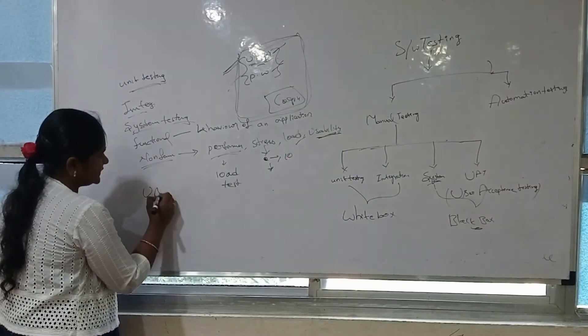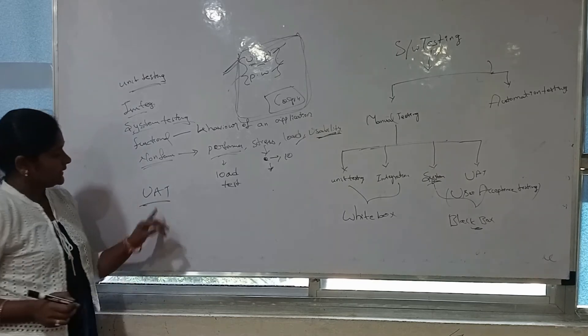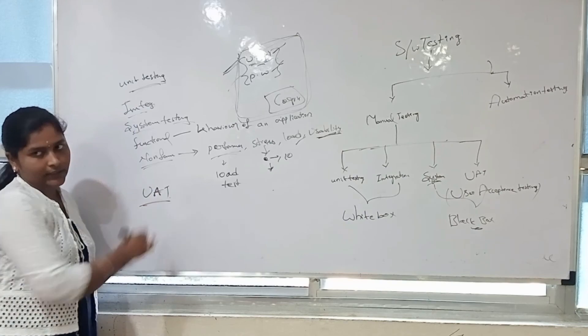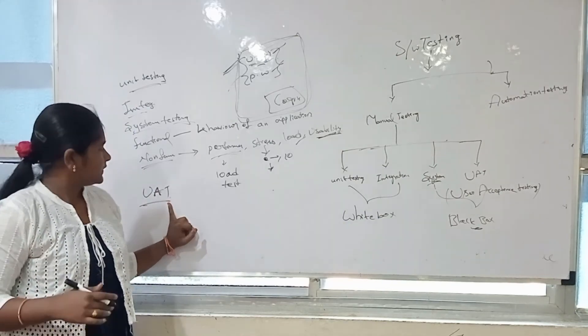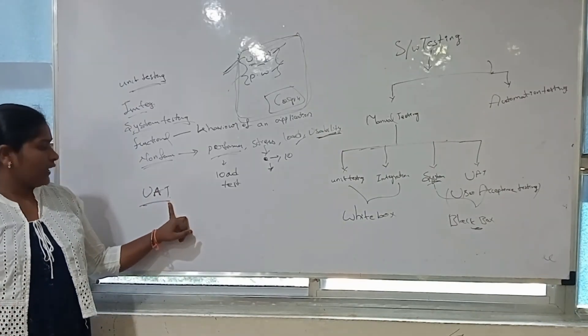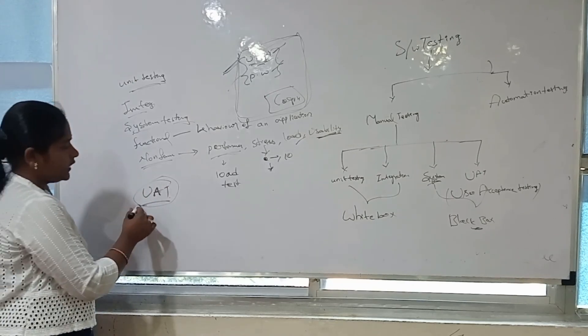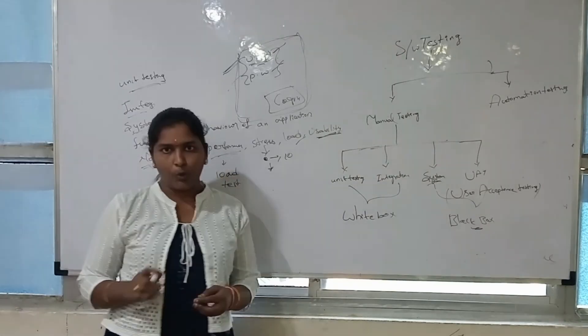Finally, we have UAT testing, user acceptance testing. It is done by end-user to check if it is maintainable or not. After developing the application or product, then we conduct the UAT testing with the selected people. That is called UAT testing. This is all about my topic.